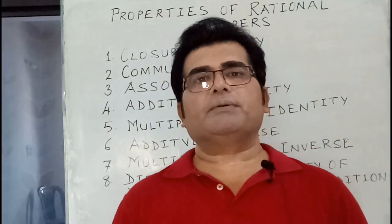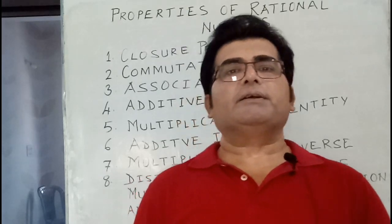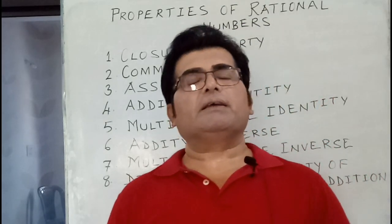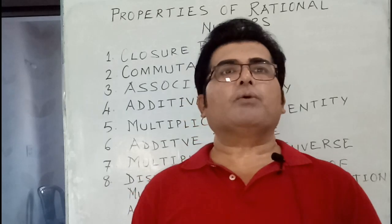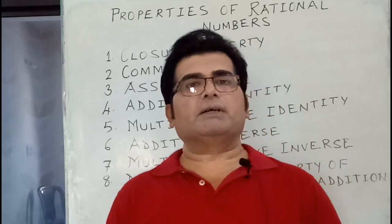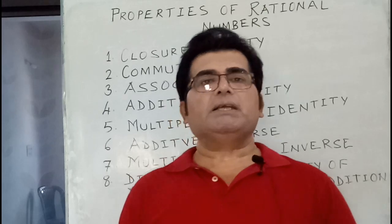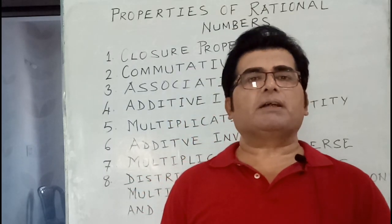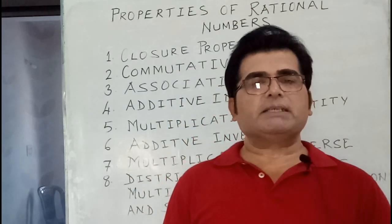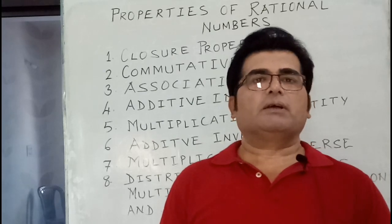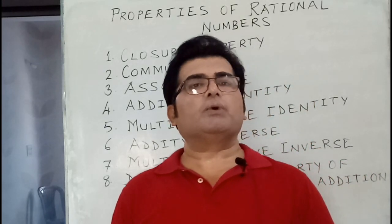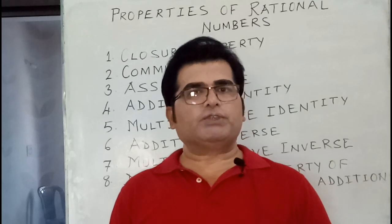The additive inverse is a number — you can say the negative of a rational number — that is called its additive inverse. The sum of a rational number and its additive inverse is always zero. For example, one upon two plus minus one upon two equals zero.